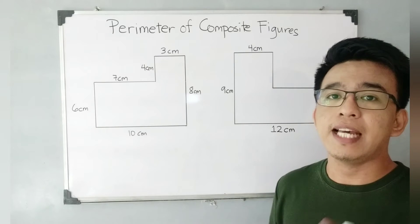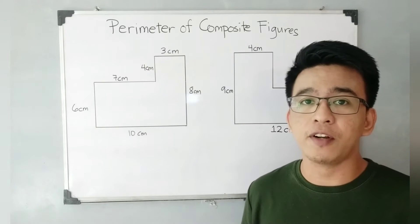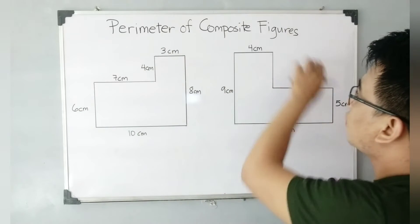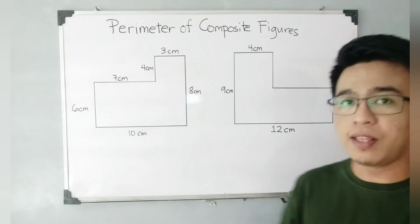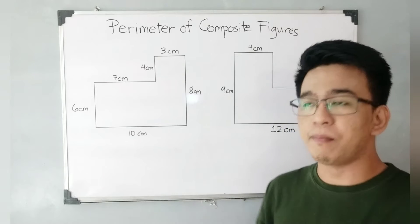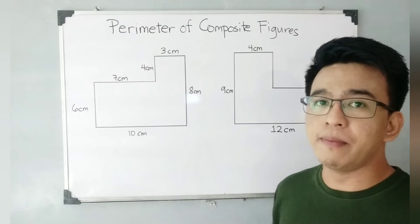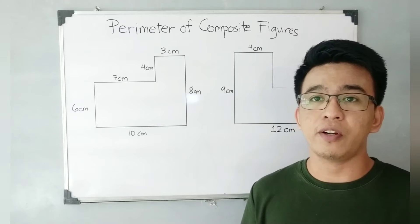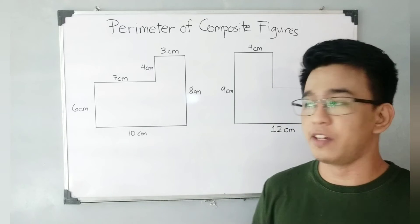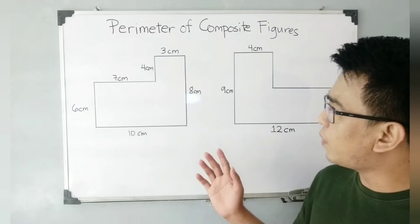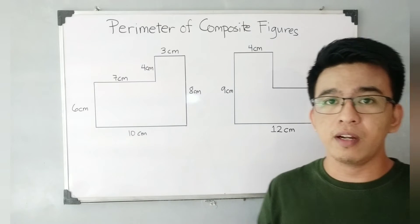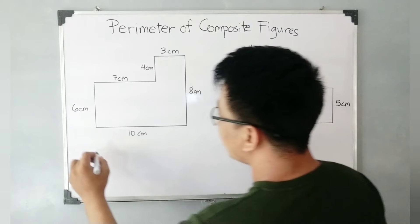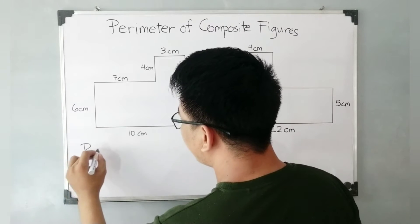Basically guys, these are examples of composite figures and our main focus for this video is to calculate for the perimeter, or the distance around these composite figures. One thing you need to remember is that you need to be organized in calculating for the perimeter of composite figures. Don't worry because this is quite easy if you're organized.